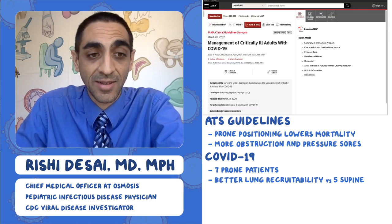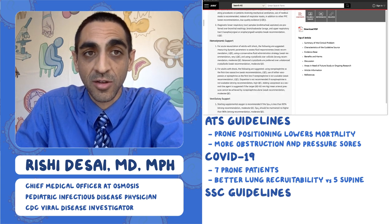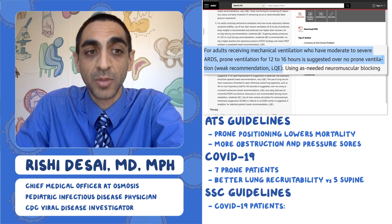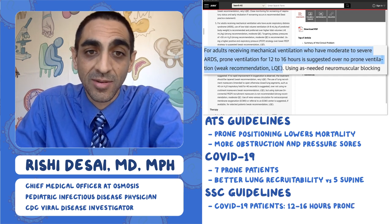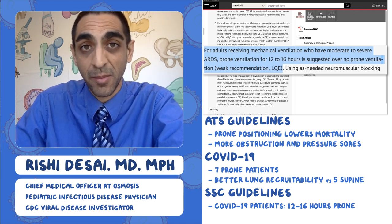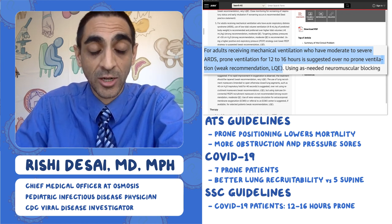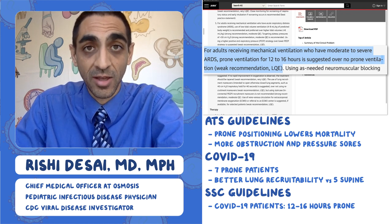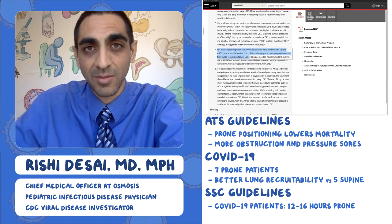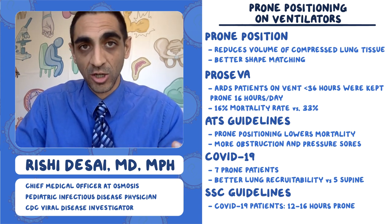That brings us to the Surviving Sepsis Campaign guidelines, put out just a few weeks ago for managing patients with COVID-19. Under ventilatory support, number four states that adults should receive prone ventilation for 12 to 16 hours over no prone ventilation — meaning being on their chest for that period of time rather than just being supine. This is considered a weak recommendation primarily because there isn't a lot of data in the COVID-19 population, but from other patient populations it seems quite beneficial — it opens up the lungs, gets more aeration, and improves gas exchange.